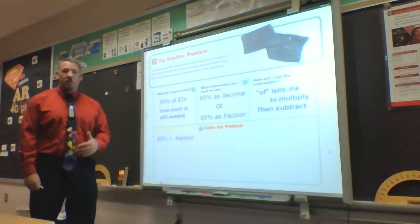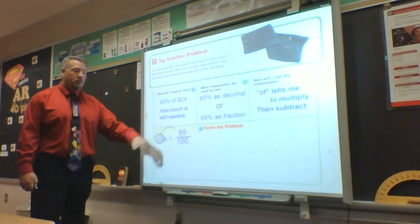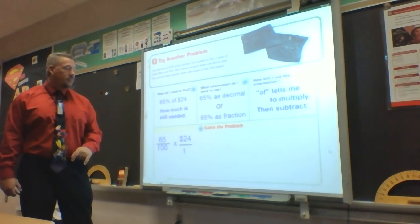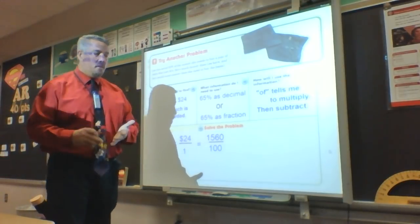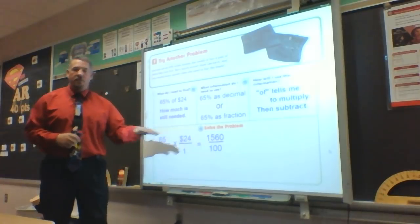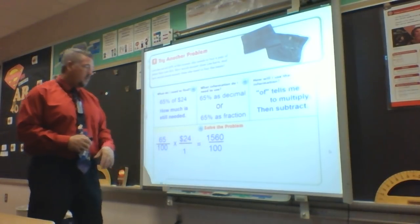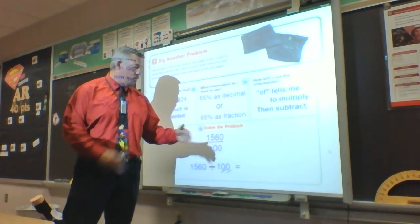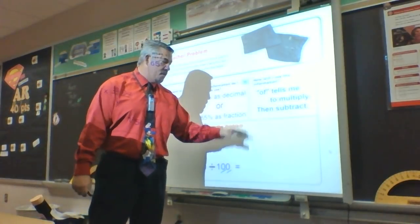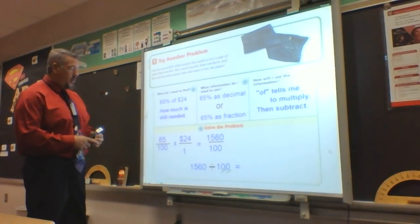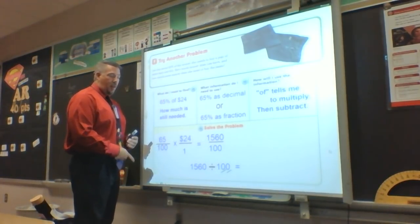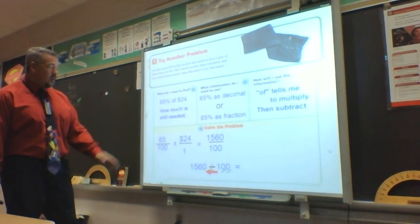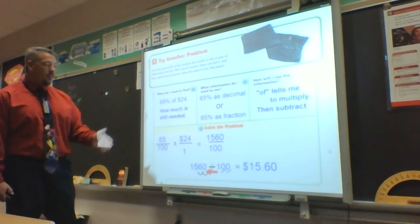Working through it with the fraction: 65% becomes 65 over 100. Multiplying by 24, I put 24 over 1. When I multiply across, I get 1,560 over 100. That's a division problem: 1,560 divided by 100. Using the shortcut — since I'm dividing, I move the decimal to the left. The two zeros tell me to move it two times. So moving left twice gives me $15.60.